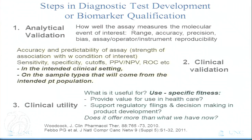Steps in diagnostic test development or biomarker qualification. Analytical validation: how well the assay measures the molecular event of interest — range, accuracy, precision, etc. Clinical validation: the accuracy and predictability of the assay, or the strength of the association with the condition of interest, including sensitivity, specificity, cutoffs, PPV, NPV, ROCs, etc. Importantly, this is performed in the intended clinical setting on the sample types that will come from the intended patient population. And there are two things already — patients and samples — that sort of represent the same thing, but they're also different.